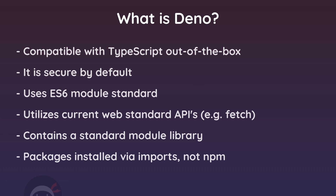It also uses the more modern ES6 module standard for importing and exporting rather than the older CommonJS one — something that's also recently been added to Node but only very recently, whereas Dino is using this from the offset. It also utilizes current web standards, meaning you get access to a lot of web APIs out of the box such as the Fetch API. That means you don't have to rely on third-party packages to implement those features, and more code can be shared between the front and the back end.